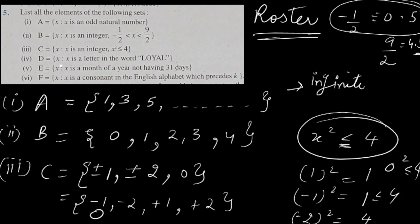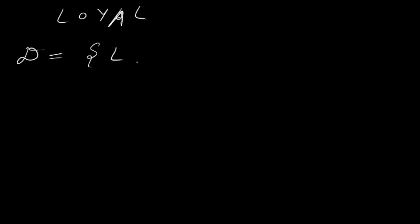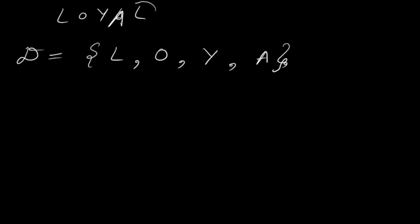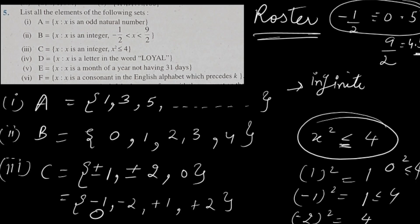Set D: X is a letter in the word 'loyal'. Writing the letters: L, O, Y, A — L appears again but we don't repeat it in a set. So D = {L, O, Y, A}. Repetition of elements is not allowed in a set.